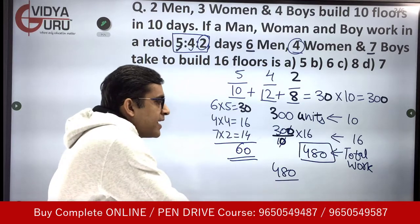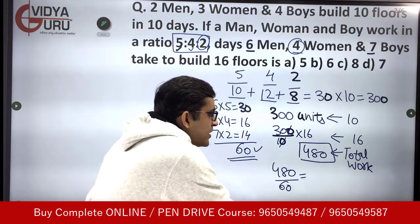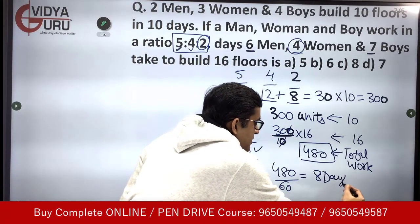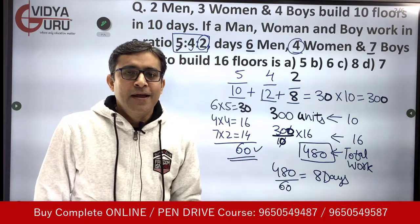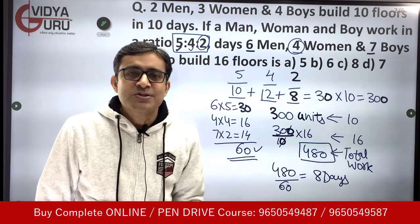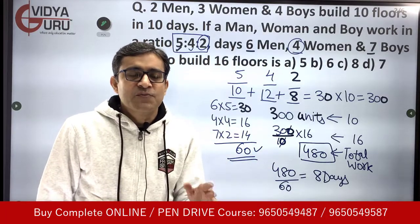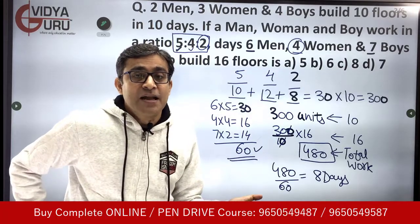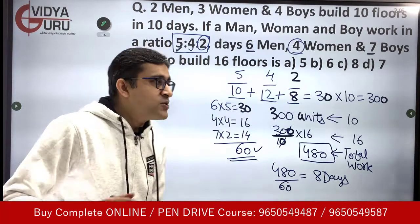In one day they complete 60 units, so to complete 480 units they will take 480 ÷ 60 = 8 days. The answer is 8 days. I did not assume any variable — no x or y. It was the simplest, shortest method without any memorization. If you like this approach, call on the numbers given on your screen to be part of our video courses and live classes.